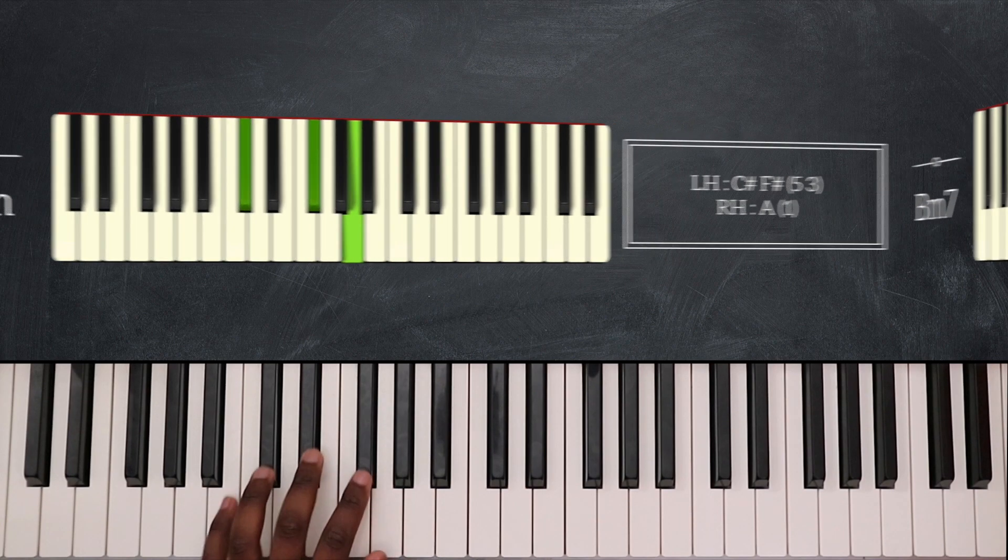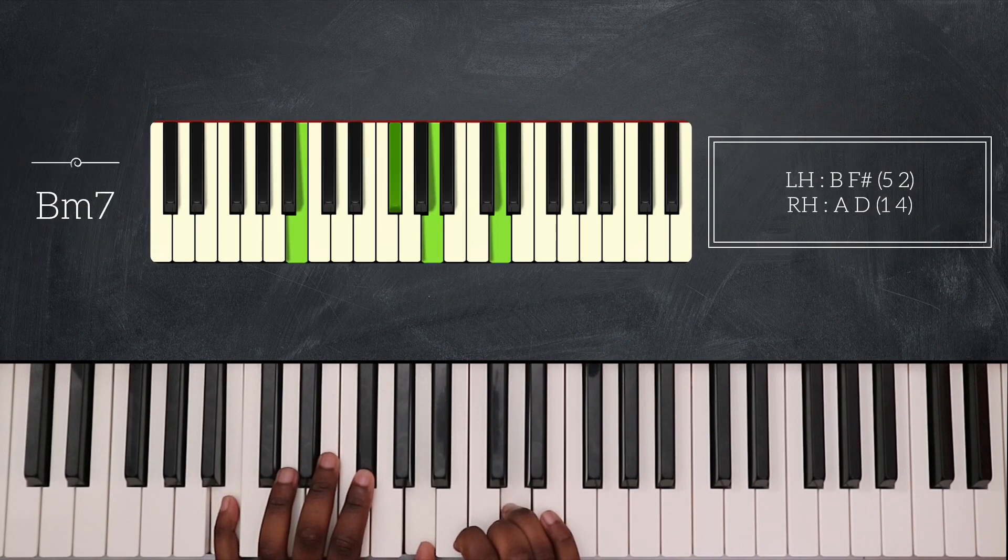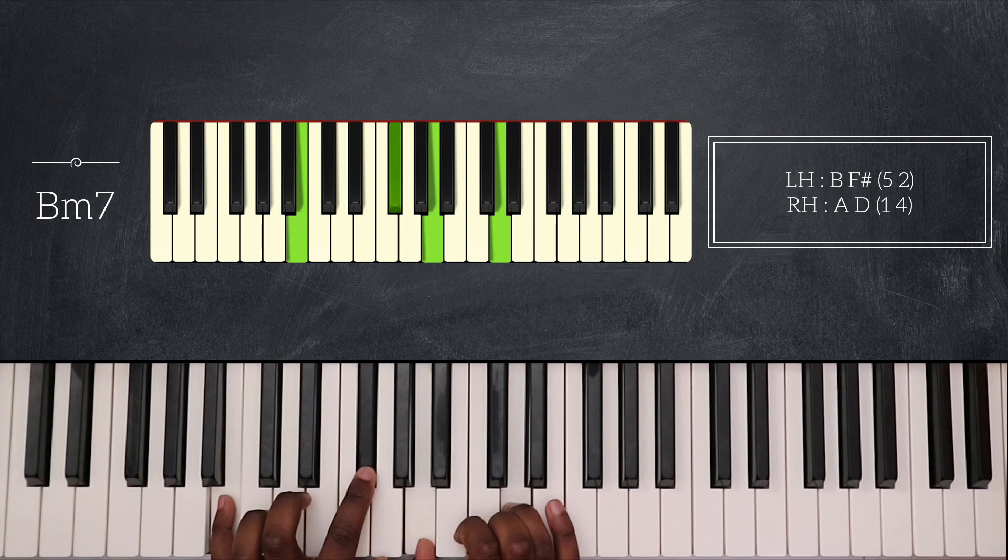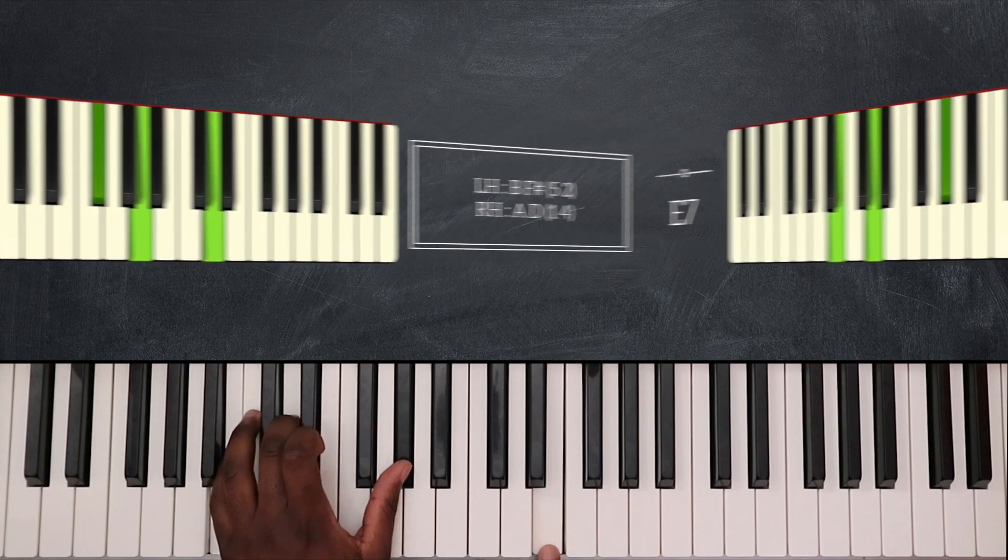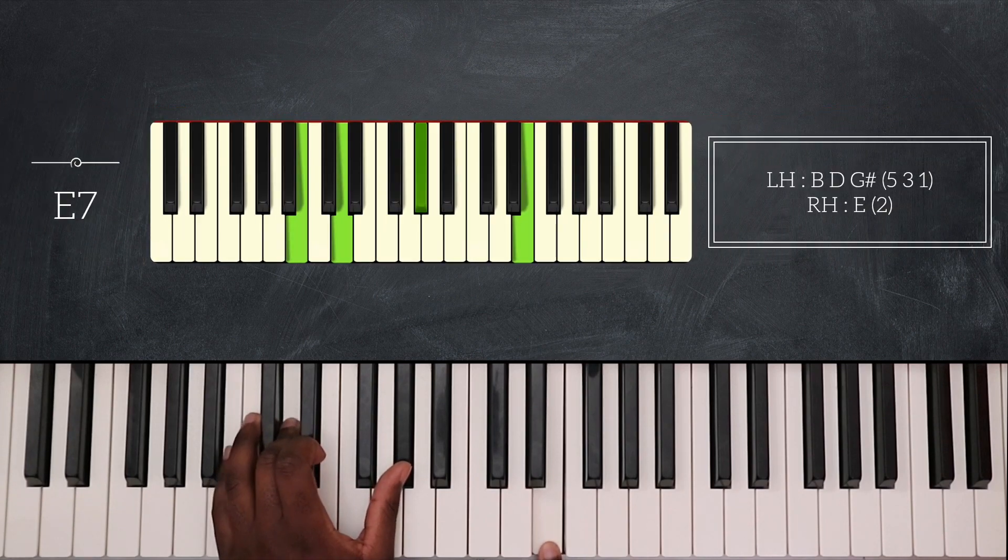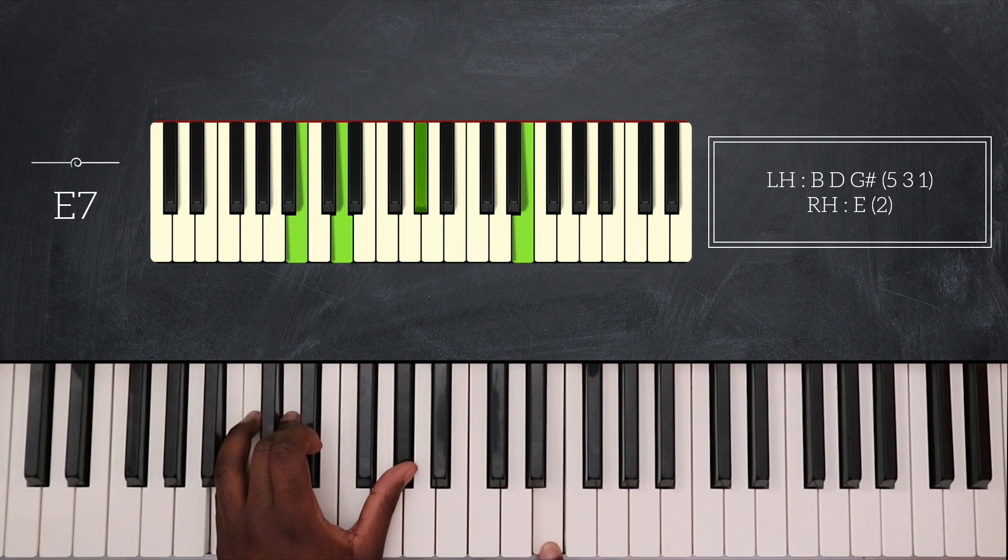Then I'll play B minor 7. B and F sharp for my left hand, and my right hand plays A and D. Then I'll play E7. So on my left hand that's B, D and G sharp. And my right hand plays E with my second finger.